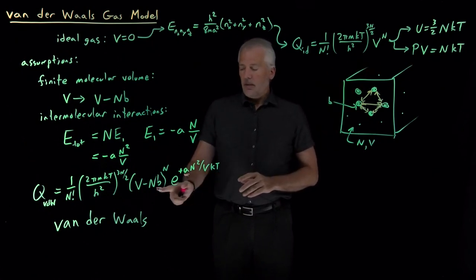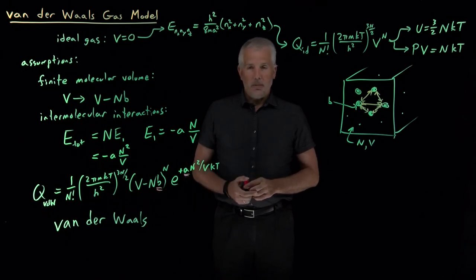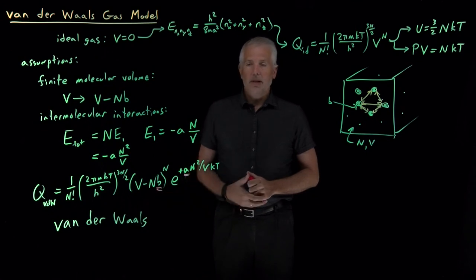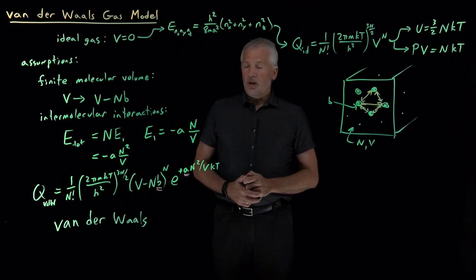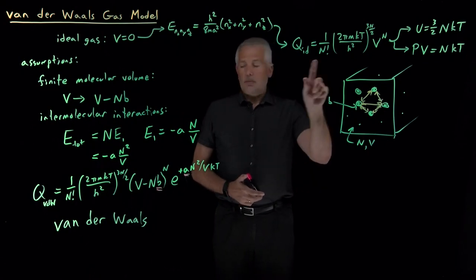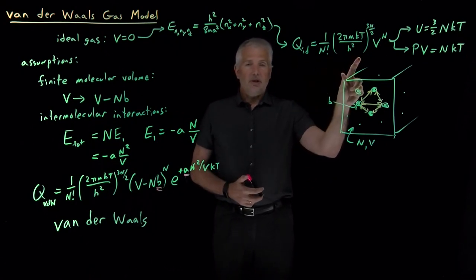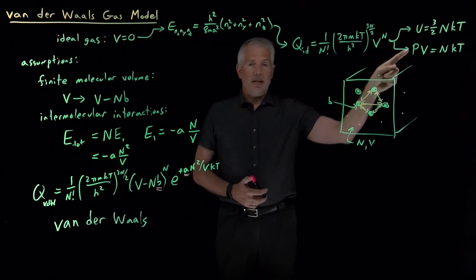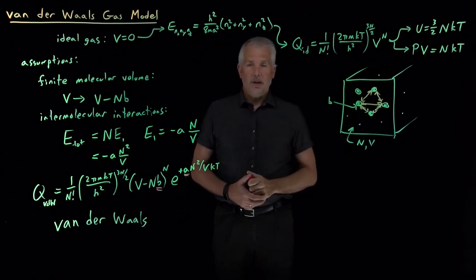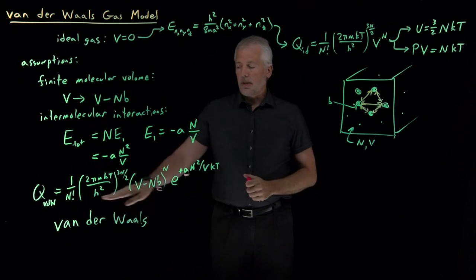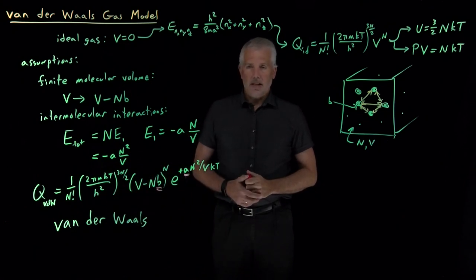The empirical nature of the model — needing experimental values to determine A and B — brings up the fact that we're interested in knowing the experimental properties of this gas. Now that we have a partition function, we can use it to obtain energy or pressure, just like we did for the ideal gas using the thermodynamic connection formulas. That's the next thing we'll do in the next video lecture.